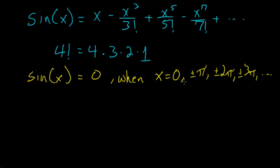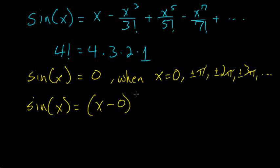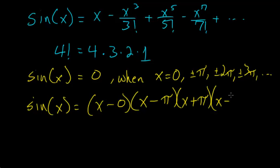We can rewrite the sine function in terms of these zeros: sine(x) = x · (x − π) · (x + π) · (x − 2π) · (x + 2π) · (x − 3π) · (x + 3π) · … and so forth.